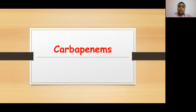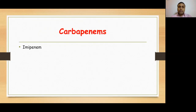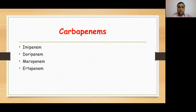Today we will be talking about another beta-lactam antibiotic group, which is carbapenems. Carbapenems include imipenem, doripenem, meropenem, and ertapenem — we have four carbapenems.